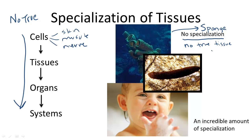Categorized very differently from sponges, flatworms developed specialized cells and also developed complex organs. But this complexity stopped at complex organs, because they don't have complex organ systems.